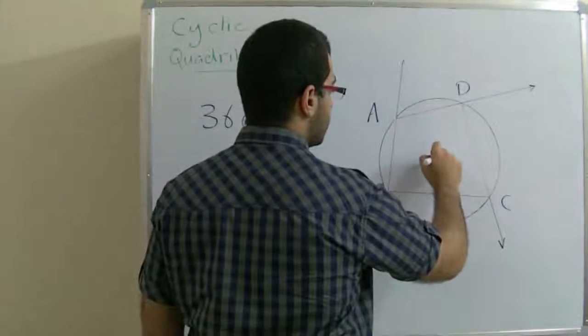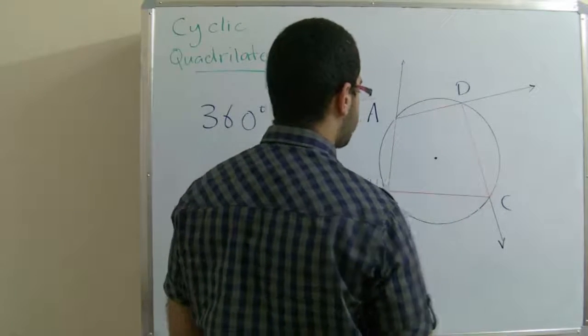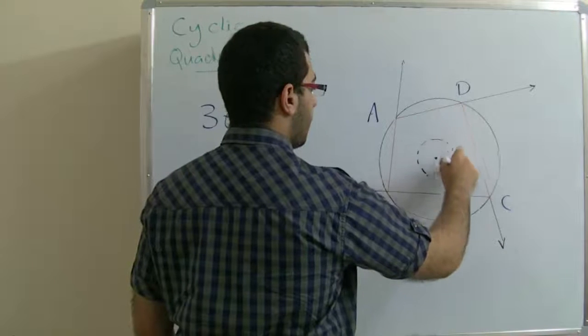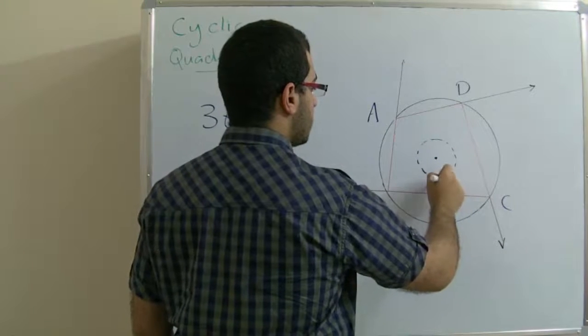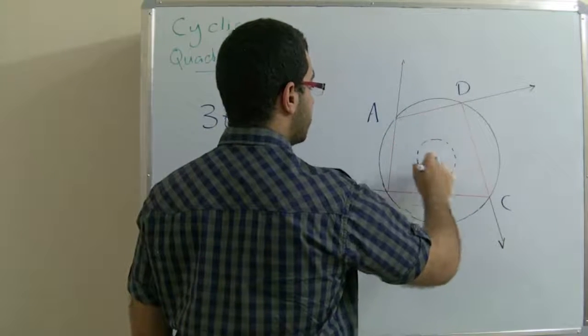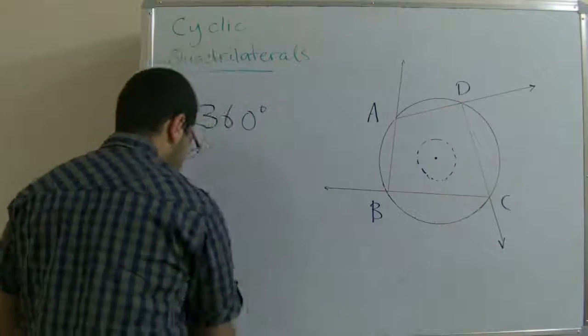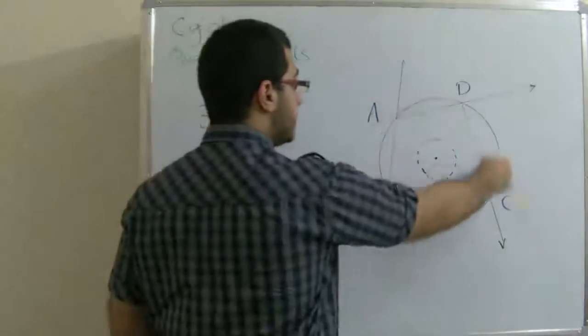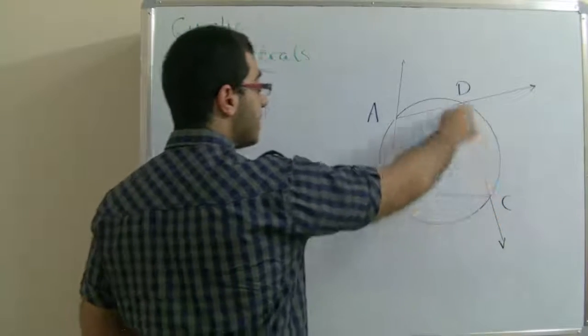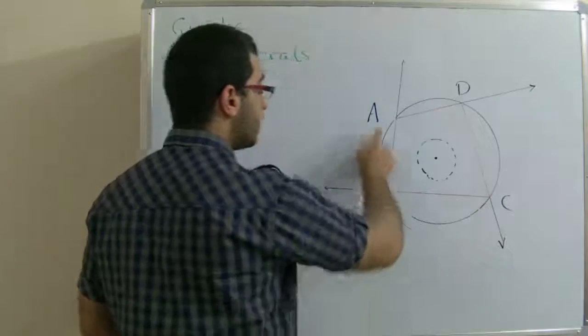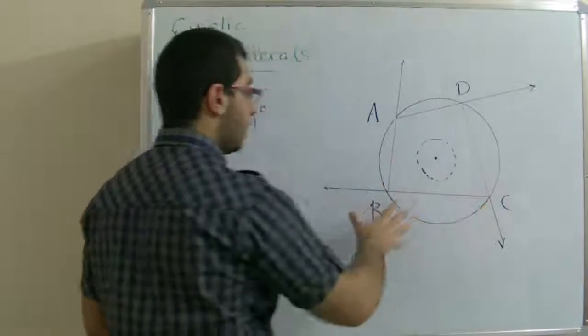If you assume that this is the center point of the circle, the measure of this angle is 360 degrees. The angle ADC here is inscribed as it's subtended by arc AC.